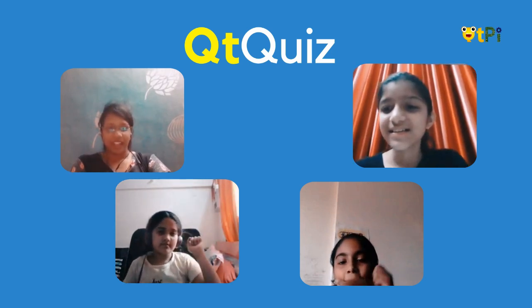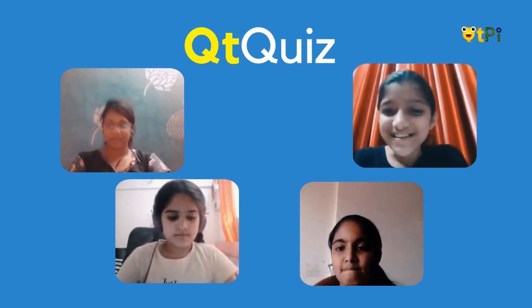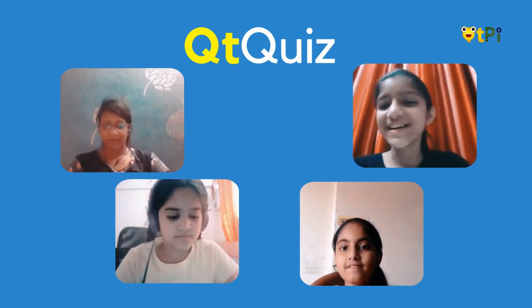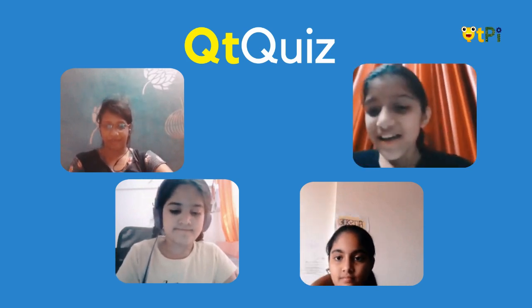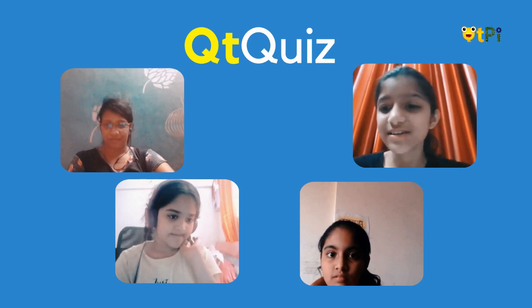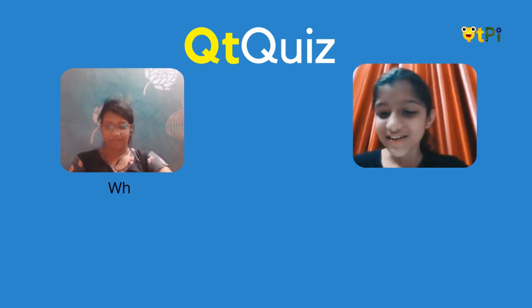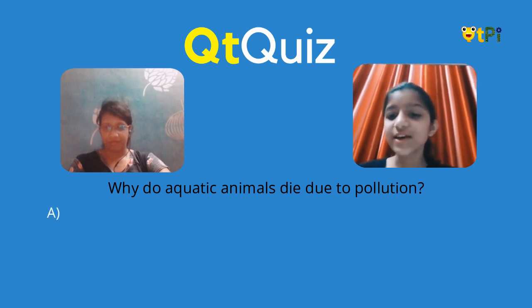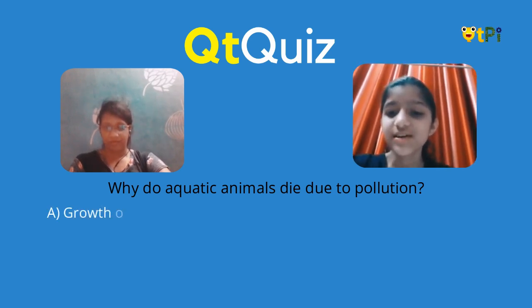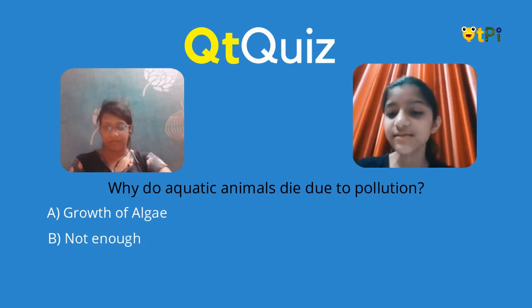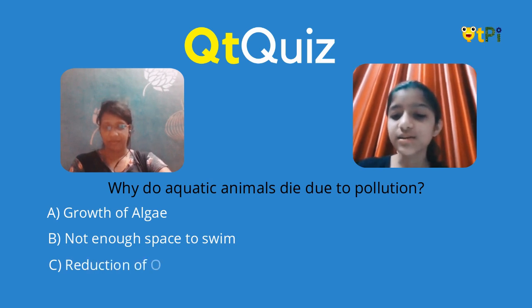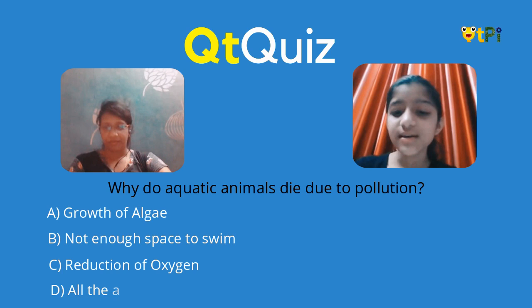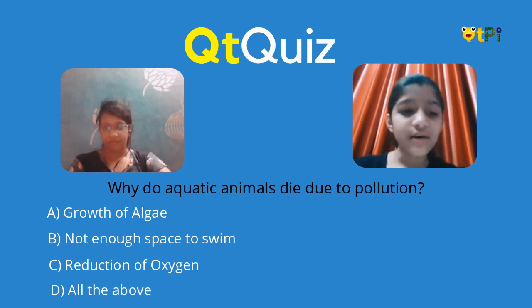Good afternoon everyone, welcome to our session. What causes death of aquatic animals due to pollution? Option A is growth of excessive plants, B is not enough space to swim, C is depletion of oxygen, D is all of the above.